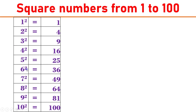6 square equals 36. 7 square equals 49. 8 square equals 64. 9 square equals 81. 10 square equals 100.